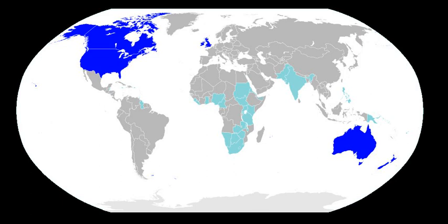It is closely related to the Frisian languages, but its vocabulary has been significantly influenced by other Germanic languages, particularly Norse, a North Germanic language, as well as by Latin and French. English has developed over the course of more than 1,400 years. The earliest forms of English, a set of Anglo-Frisian dialects brought to Great Britain by Anglo-Saxon settlers in the 5th century, are called Old English.